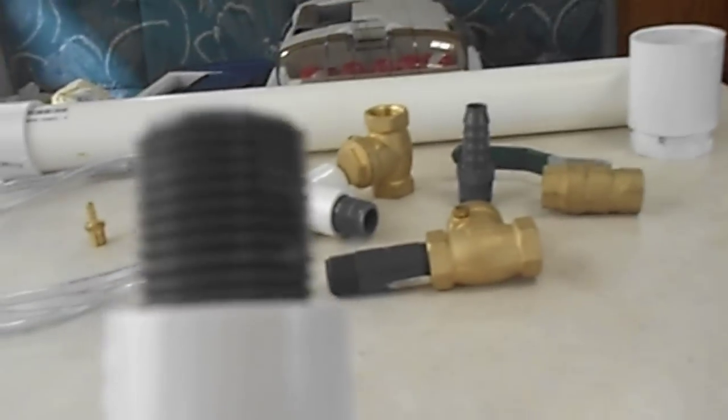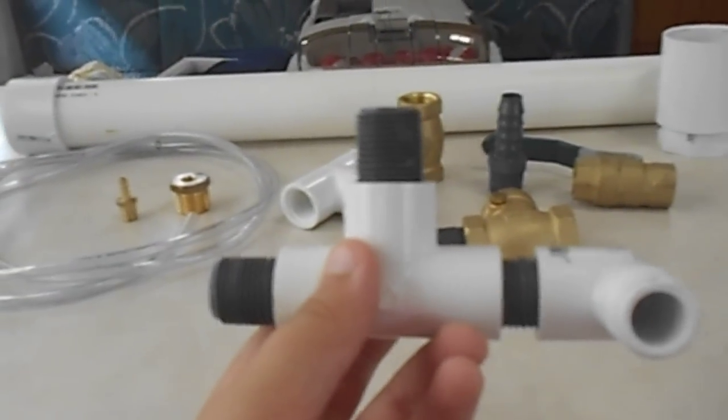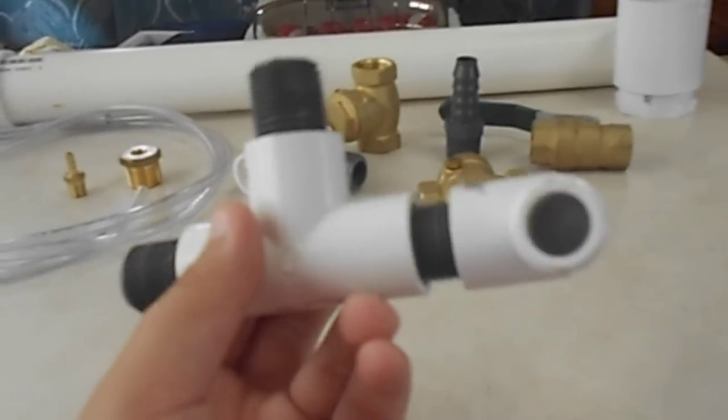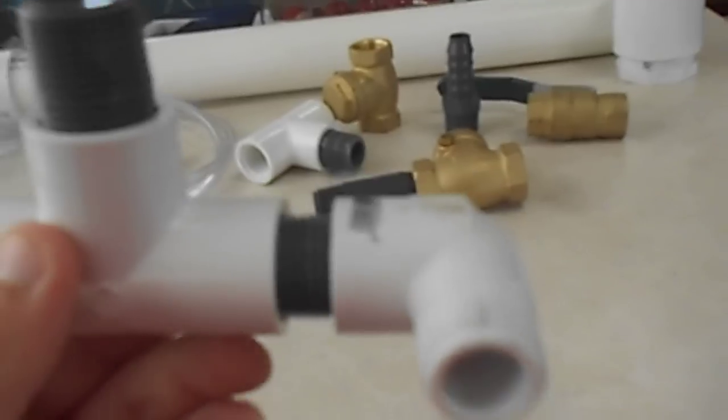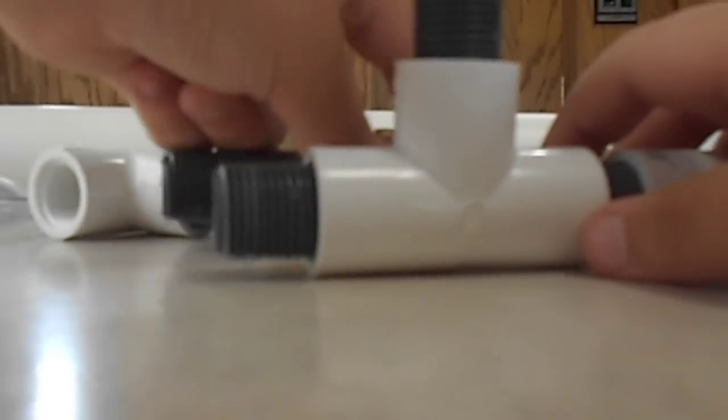You're going to take three of the four half by close fittings and screw them into one of the half inch T's. These fittings are all screwed together - you can do glue if you want but I don't like that. Half inch street elbow screws on just like that.